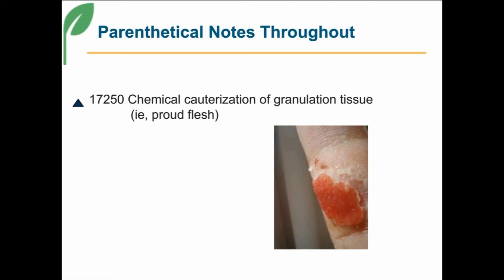You'll notice in parentheses is 'proud flesh.' Last year it also included sinus or fistula. What does that mean exactly? Well, the clinical piece is that granulation tissue is normal — it's what your body does to heal itself when it has a wound. But what you see on the screen is not normal. This is overgrowth of granulation tissue, and it's often called proud flesh.